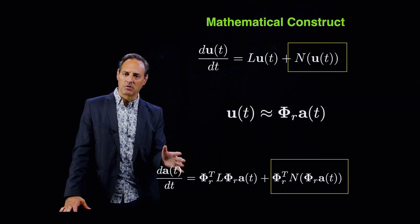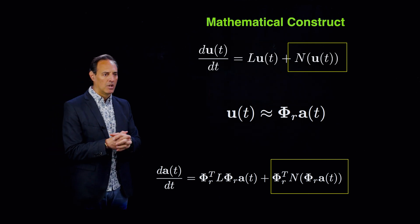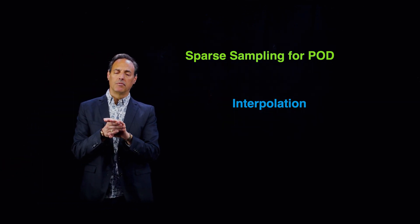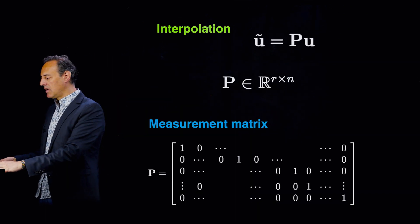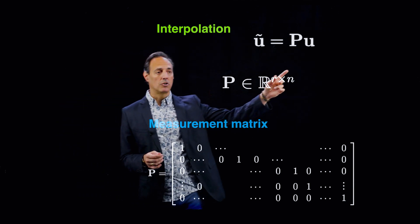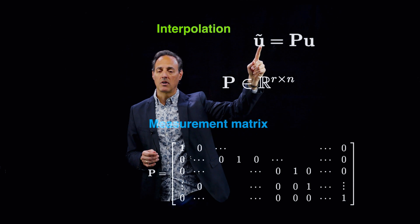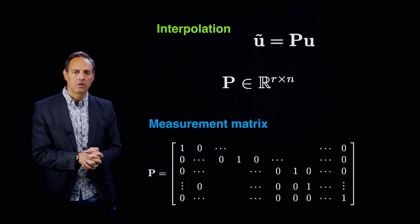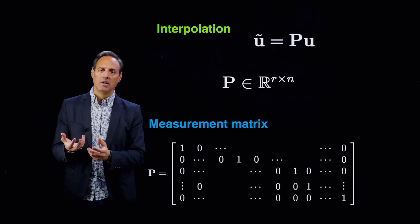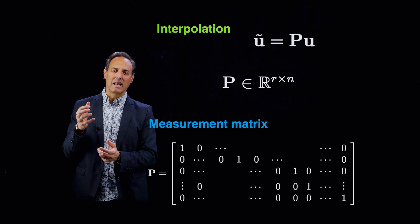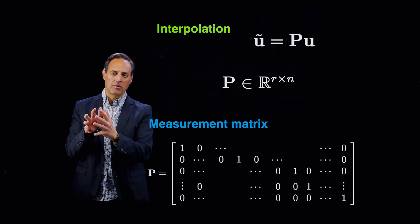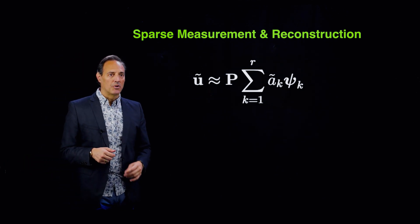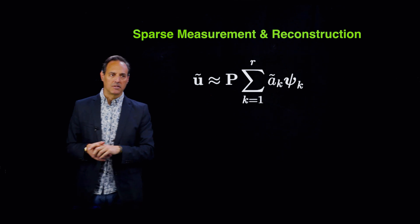The question is how do we do this. We've talked about interpolation and the GAPPY POD approach, and we've constructed a couple of principled sampling architectures. The idea is that interpolation is all about taking my N-dimensional state space U and dropping it to an R-dimensional space Ũ. The P matrix tells me about that measurement — how to drop from N dimensions to R dimensions, with measurements that give great interpolation points so I can reconstruct the full N-dimensional space.